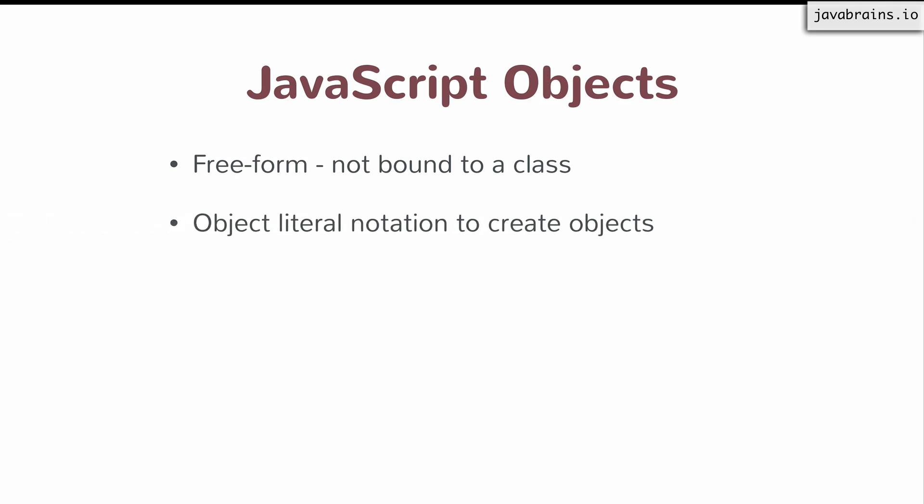Object literal notation can be used to create objects. We saw that you can use curly braces open close with nothing there to create an empty object. Or you can use the curly braces open close and have properties and values defined with the format property colon value. And then if you have more properties, you end it with a comma, and then the next property colon value, comma, property colon value. So you can define as many properties as you want in that literal structure.